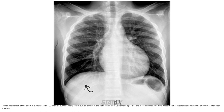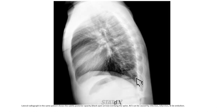Note the absence of the splenic shadow in the left upper abdominal region. The lateral radiograph in the same patient shows subtle posterior opacity overlying the spine.